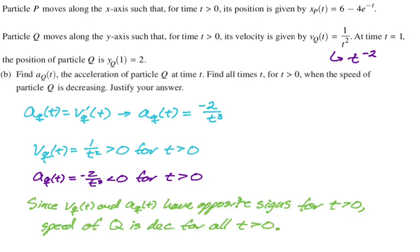So I'm just going to write that. So since v_Q(t) and a_Q(t) have opposite signs for t greater than zero, the speed of Q is decreasing for all t greater than zero. I don't ever remember that being the case before. Kind of a neat problem.